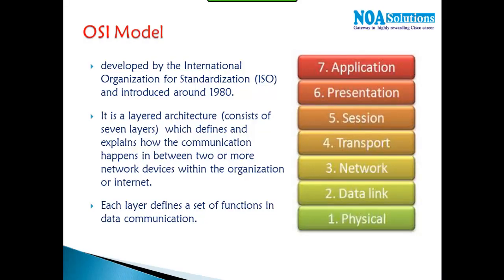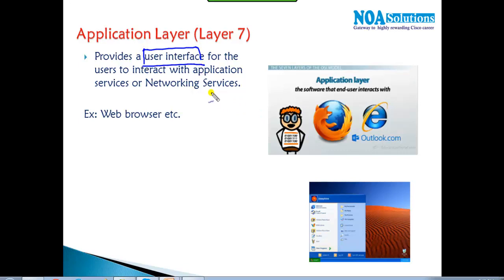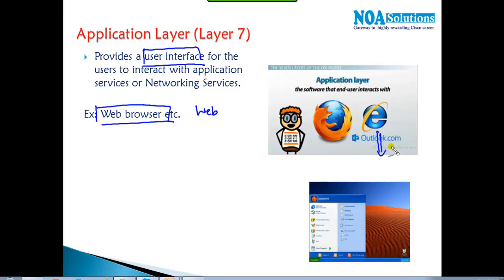The Application layer's major job is to provide the user interface. For example, if you want to access the internet, you need a browser. To access web traffic you use a web browser like Mozilla. For sending and receiving emails, you use mail clients like Outlook. These are the actual applications we use, but behind them there are specific protocols.